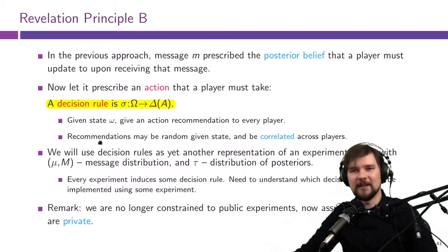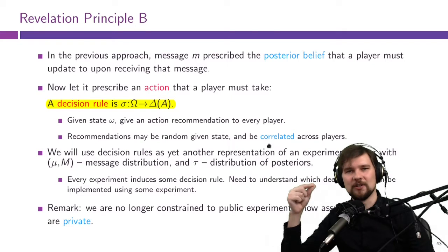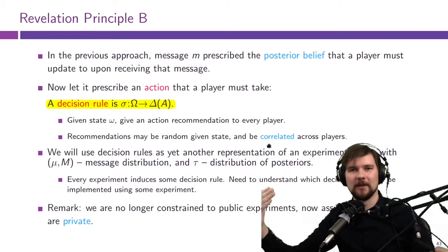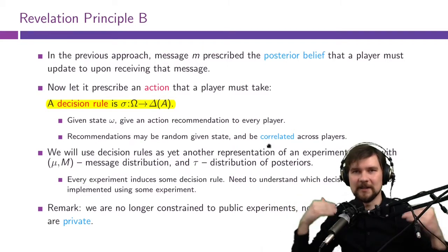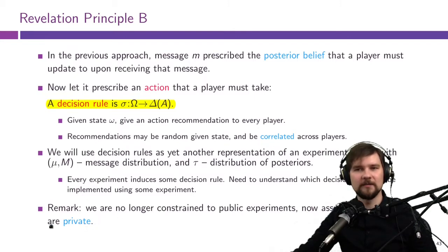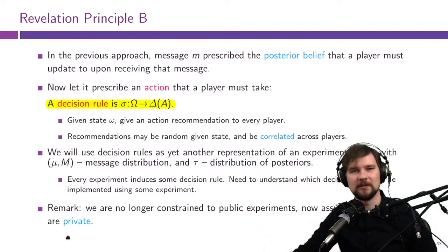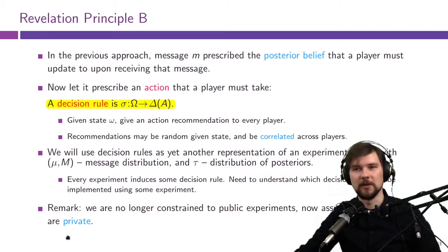In public persuasion, recommendations were perfectly positively correlated — we're saying the same thing to all players. Now with private persuasion, different players can get different recommendations that are independent or correlated, as in the public persuasion case.